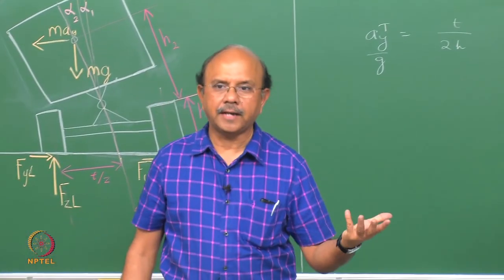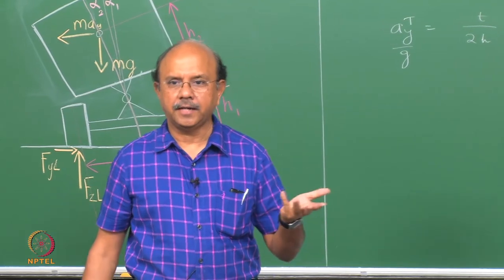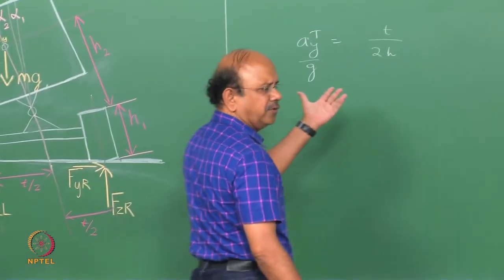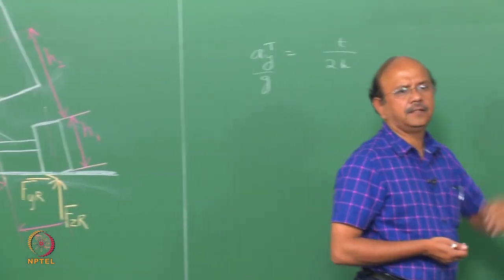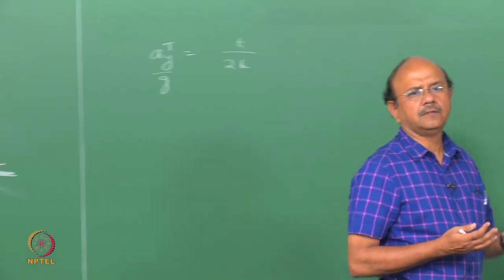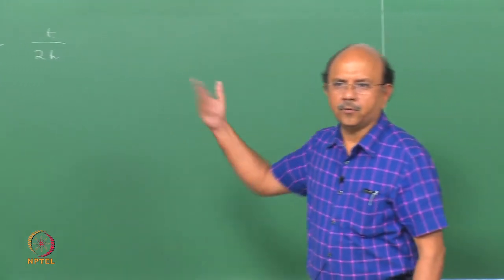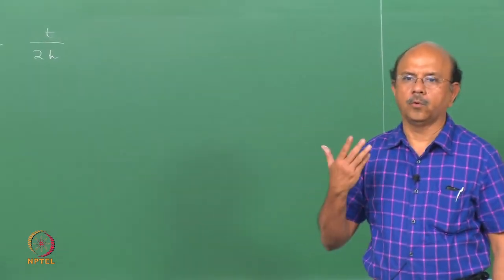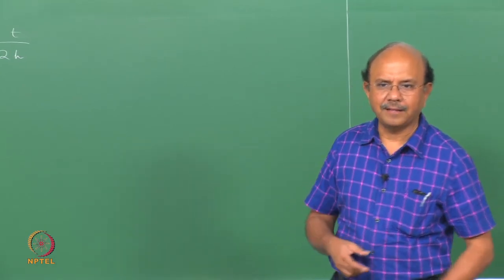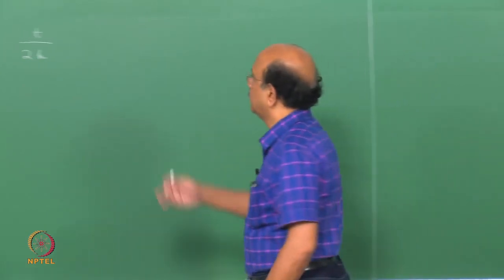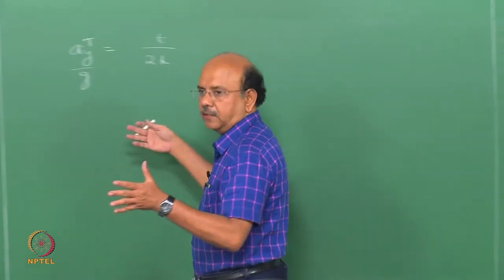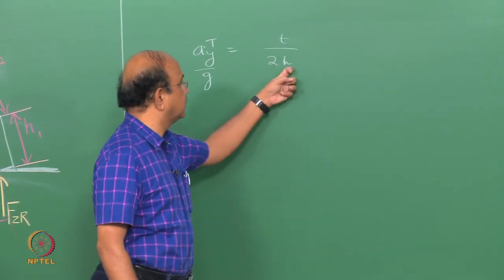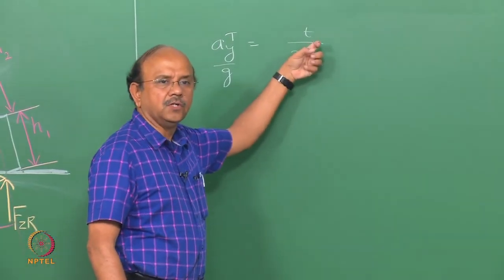T is the track and H is the height. Very intuitively, the larger the height, the higher the rollover propensity. And the larger the track, the larger this ratio T/2H becomes, and the lesser will be the propensity for the vehicle to roll over.